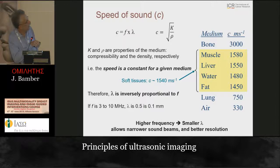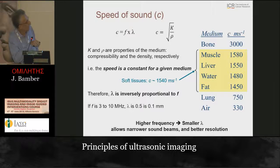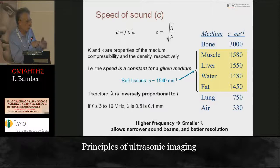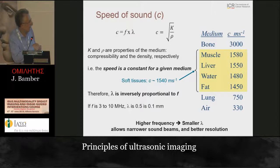Different speeds for different tissues are shown here: muscle, liver, water, fat, lung, and air. Fat is typically the only solid soft tissue with a speed of sound lower than water. All other soft tissues - liver and muscle as examples - tend to have a speed of sound higher than water. This has consequences I'll explain later relating to refraction and aberration of the wave as it travels through tissues containing fat, which is important for breast imaging.